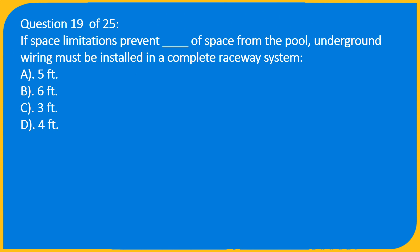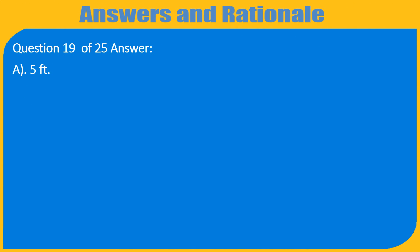Question 19 of 25: If space limitations prevent how many feet of space from the pool, underground wiring must be installed in a complete raceway system? A. 5 feet, B. 6 feet, C. 3 feet, D. 4 feet. Answer: A. 5 feet.